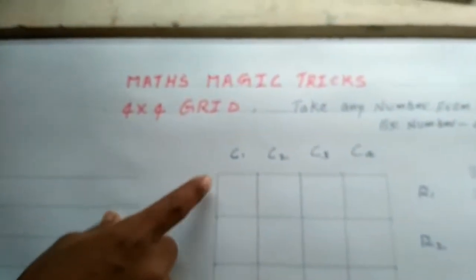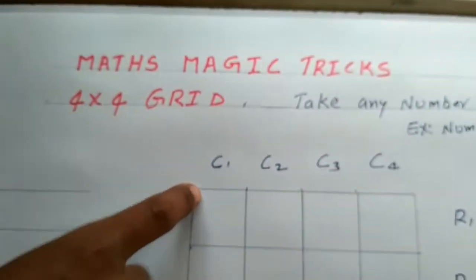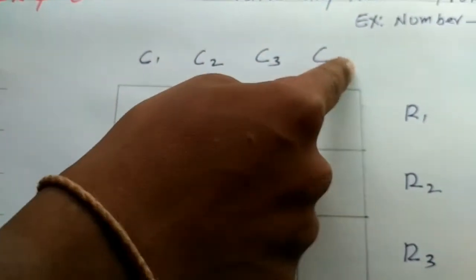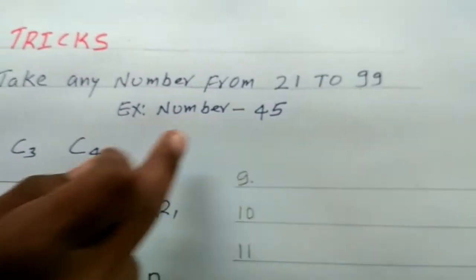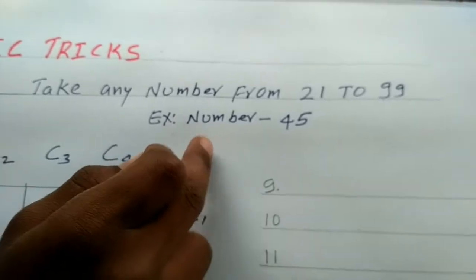I am showing how to make a 4x4 grid. It has four columns and four rows — total 16 boxes. Take any number from 21 to 99. As an example, we'll use the number 45. We should start from here.